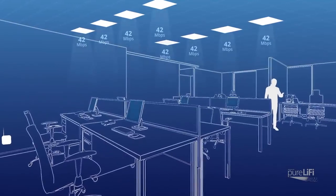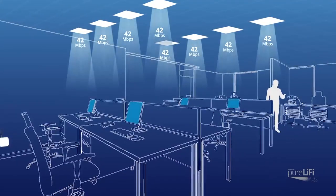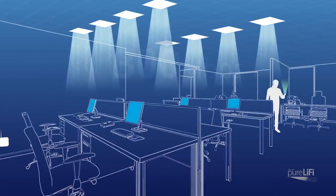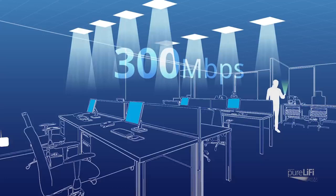However, with a Li-Fi network of lights that offer 42 megabits per light, even if you had only 8 lights in your room, those same 15 people could share more than 300 megabits per second. That's dense and fast wireless communication.